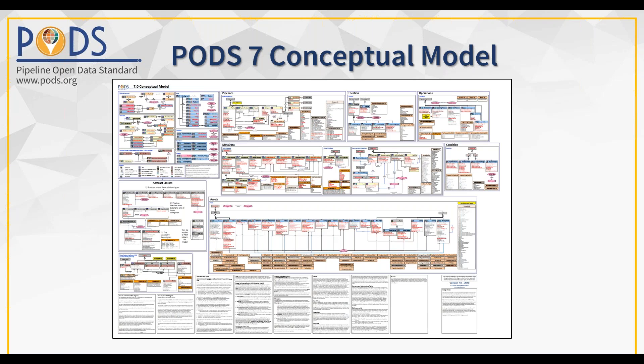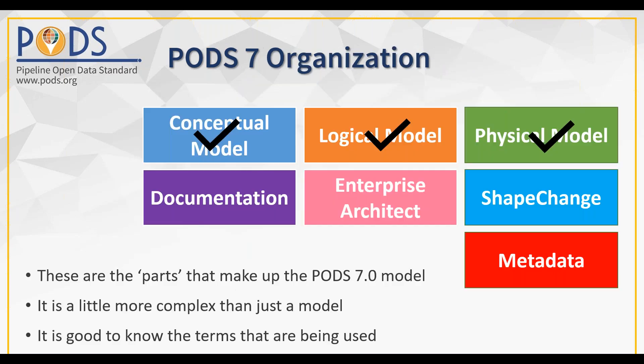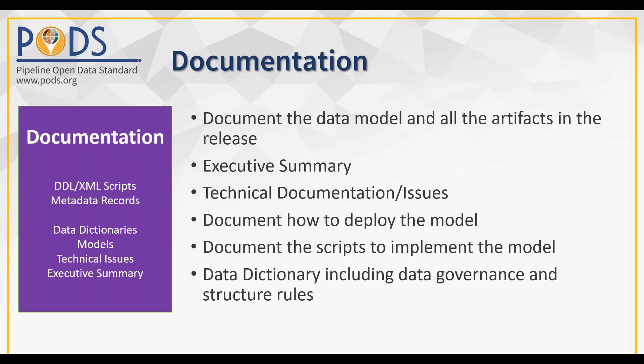We have discussed the conceptual, logical, and physical models. Now I want to look at a different organizational aspect of Pod 7 in this unit — I want to talk about the other parts that make up Pod 7: the documentation portion, the Enterprise Architect portion, the Shape Change portion, and the metadata portion. These are other aspects of the Pod 7 model that you need to know something about before you jump in.